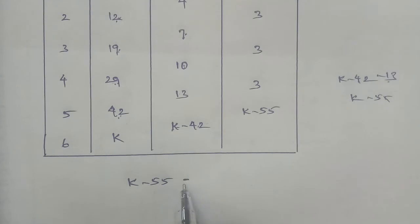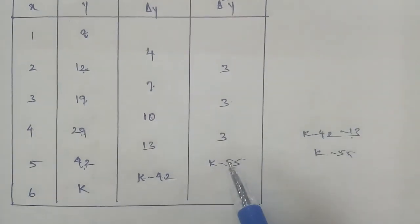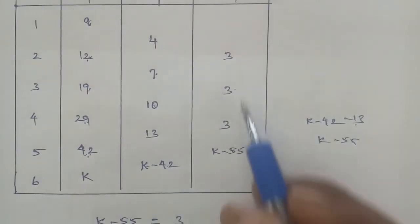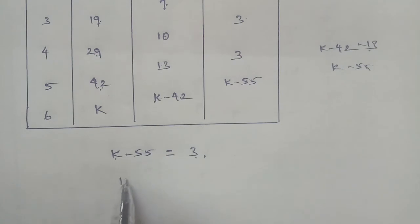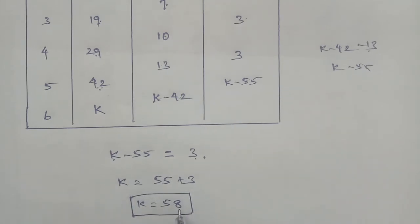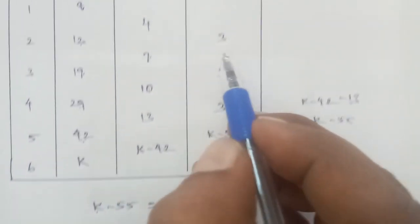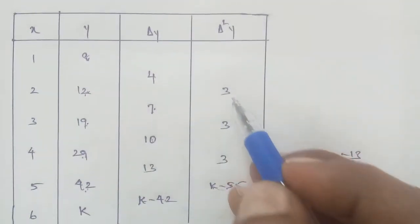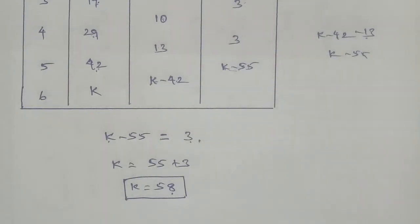From the condition that the second order difference is constant, we have K minus 55 equals 3. The constant value is 3, so K equals 55 plus 3, which gives K equal to 58. This satisfies the condition that all second order differences equal 3.